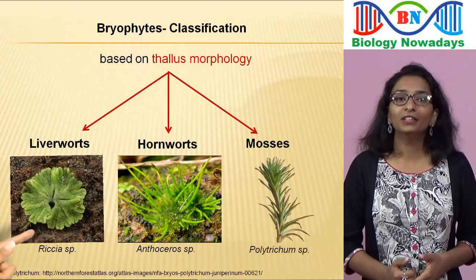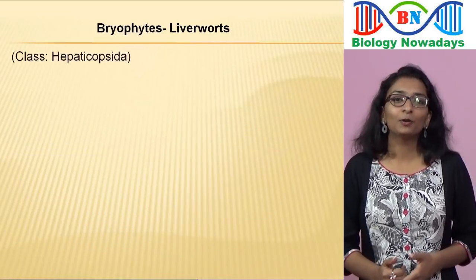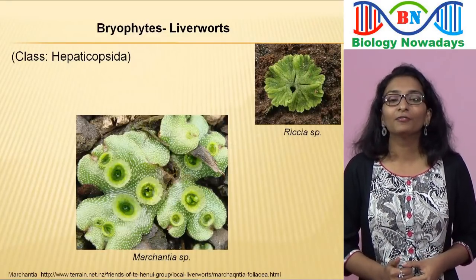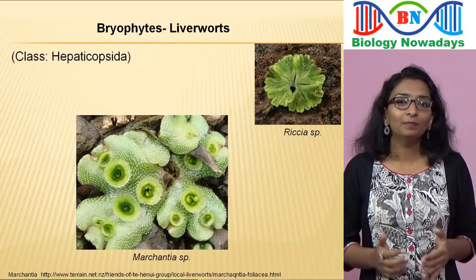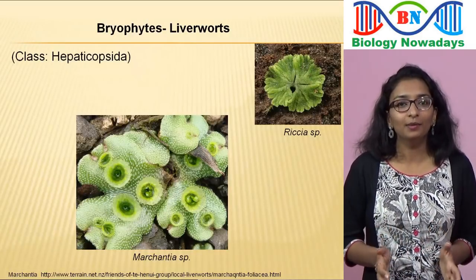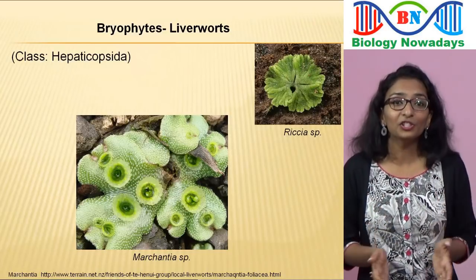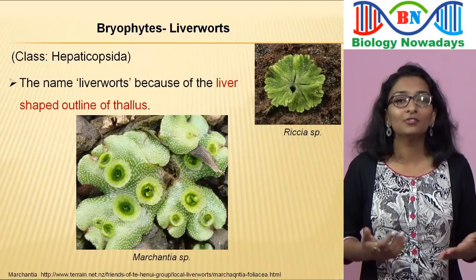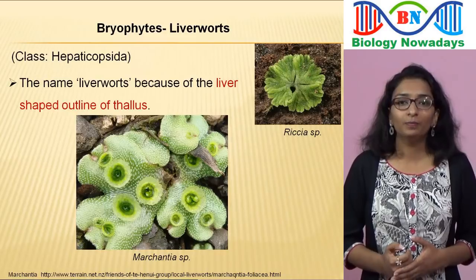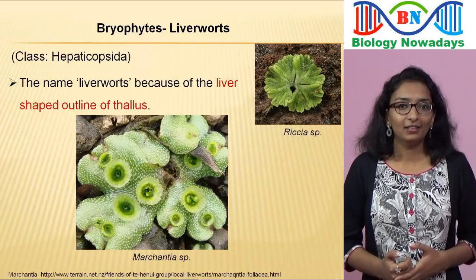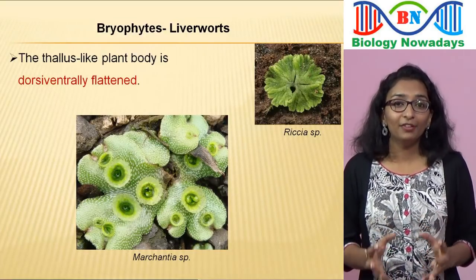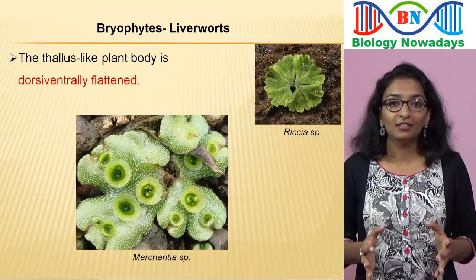First, we will see the characteristics of the liverworts. They belong to the class Hepaticopsida. Members belonging to the genus Riccia and Marchantia are examples of liverworts. They are smaller plants than mosses. Their name dates from the 9th century; in those times, it was thought that because of the liver-shaped outline of the thallus, these plants might be useful in treating diseases of the liver. The word 'wort' means small plant. The main plant body is thallus-like and dorsiventrally flattened.